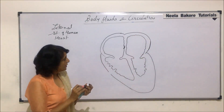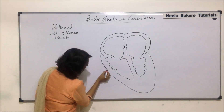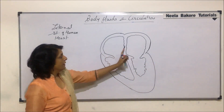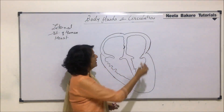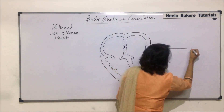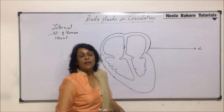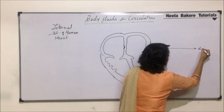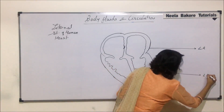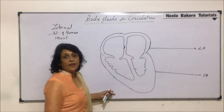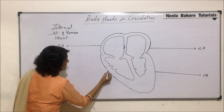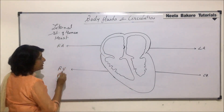Now let us label it and try to understand why we have drawn these things in this manner. We will go chamber by chamber. This side is the left side — this compartment is the left atrium (LA) and this is the left ventricle (LV). These are very commonly used abbreviations. This is the right atrium (RA) and this compartment is the right ventricle (RV).